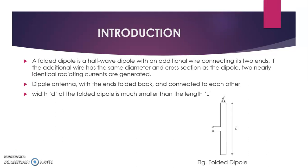First of all, the introduction — what is the folded dipole? A folded dipole is a half-wave dipole with an additional wire connecting its two ends. If the additional wire has the same diameter and cross section as the dipole, two nearly equal radiating currents are generated. It is a dipole antenna with the ends folded back and connected to each other, where the diameter D of the folded dipole is much smaller than the length.